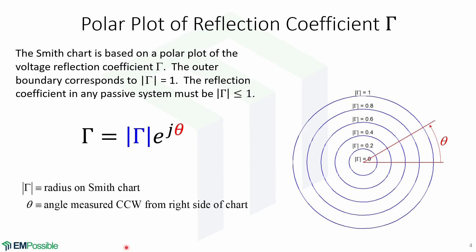The Smith chart is based on a polar plot of the voltage reflection coefficient gamma. This is the formula for the reflection coefficient, which is equal to the magnitude of the reflection coefficient times e to the j theta.